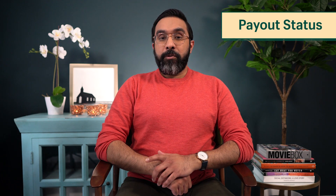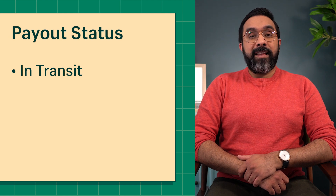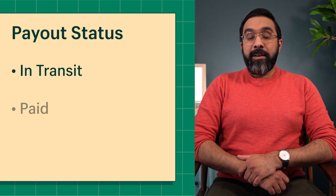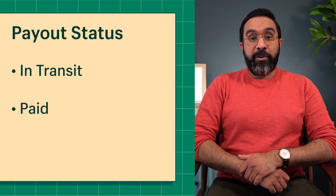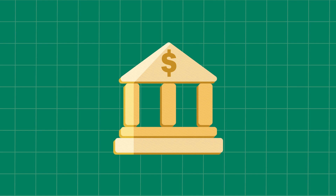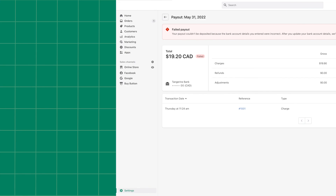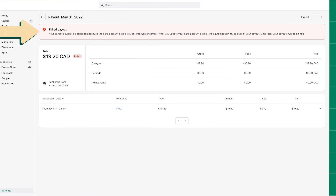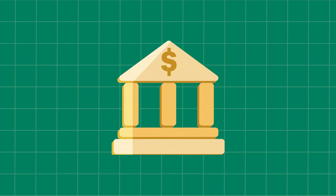The status of a payout will either be displayed as In Transit, meaning the funds are in the process of being sent to your bank account; Paid, meaning the funds have been sent to your bank but may need additional processing before they're put into your account; or Failed. Payouts can fail because of an issue with your bank account. If a payout fails, you'll be sent an email, a notification will appear in your admin, and a hold will be placed on all future payouts until the issue is resolved. To resolve any issues with your account, you'll need to reach out to your bank directly.